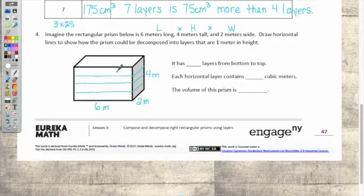Now let's fill this in. It has blank layers from bottom to top. Three. Four. Four. Okay. Each horizontal layer contains blank cubic meters. Twelve. You think it's twelve? Yes. So two rows of six? Yes. Okay.